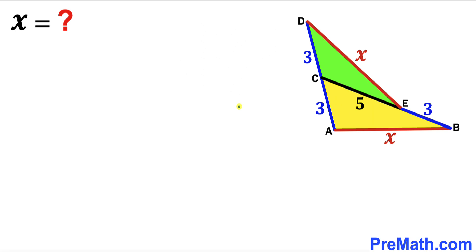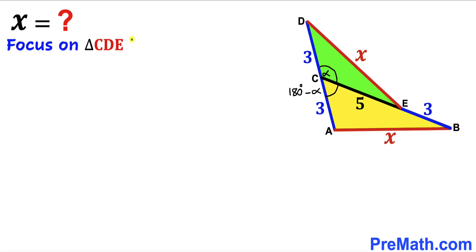Let's get started. Here's our very first step. Let's focus on this whole straight angle — both of these angles together are 180 degrees. I'm going to label this angle as alpha, so the other angle is going to be 180 degrees minus alpha.